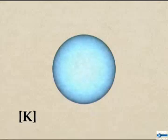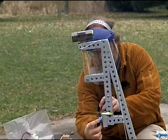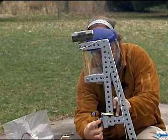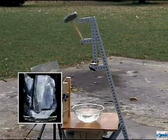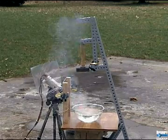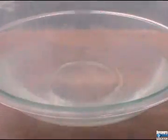Potassium is very reactive and will typically lose its single valence electron when combining with other elements. Potassium reacts violently with water and releases hydrogen gas, which ignites almost instantly due to the heat of the reaction. Potassium melts and reacts with water to form liquid droplets of alkali potassium hydroxide, which quickly dissolves in the water.